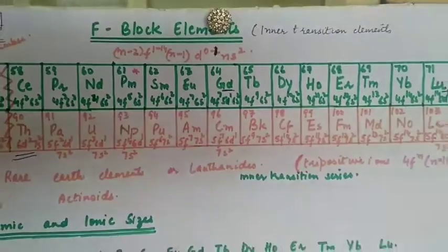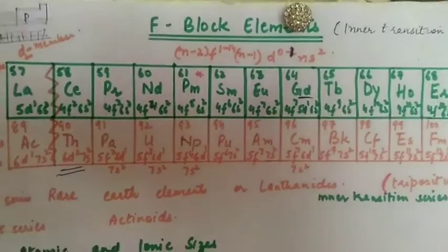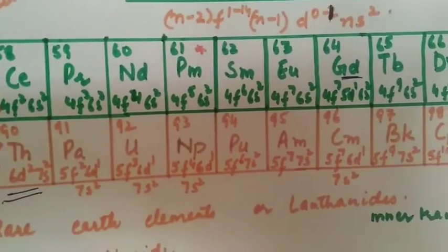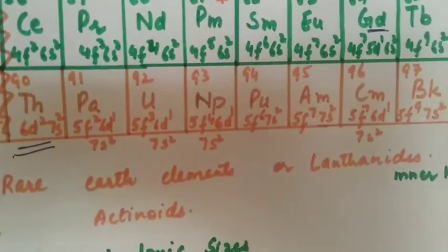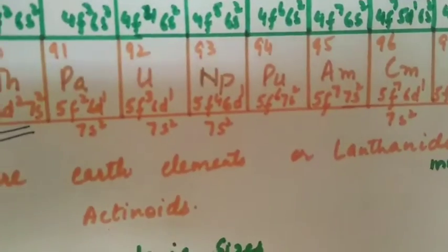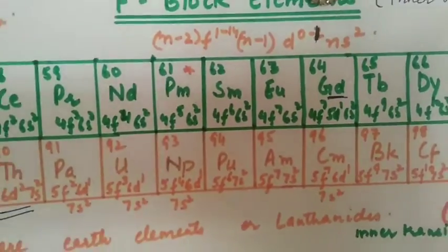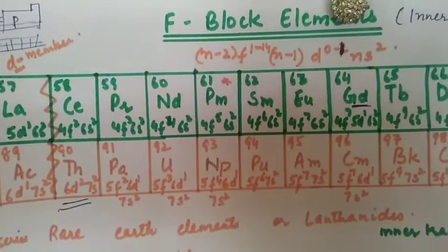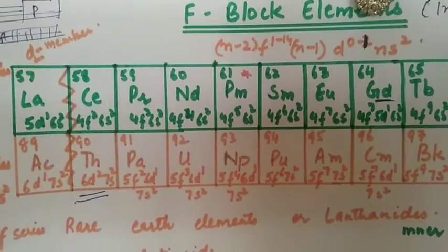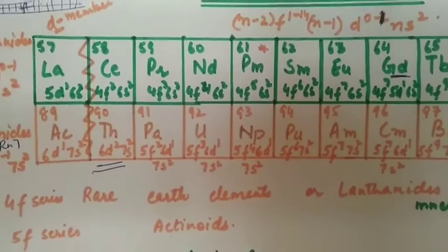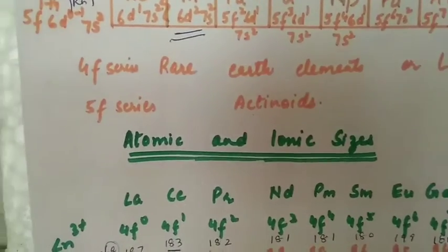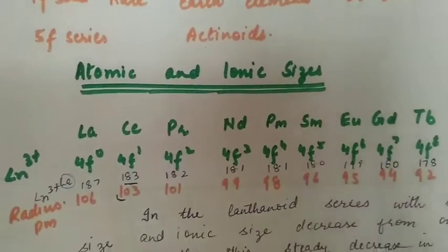Similarly, the elements after actinium are called actinoids and electrons are filled accordingly in the 5f subshell. This will be covered in actinoids. Lanthanoids and actinoids - their properties are studied separately.